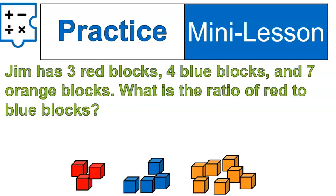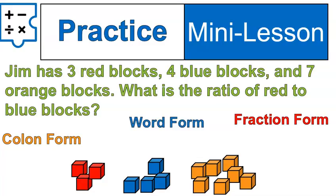I'll draw this out where we have these blocks, and we can write them in colon form, word form, and fraction form. The ratio we're looking for is a ratio of red to blue. So there's three red blocks and four blue blocks. So the ratio would look like this, three to four, three to four, or three over four.